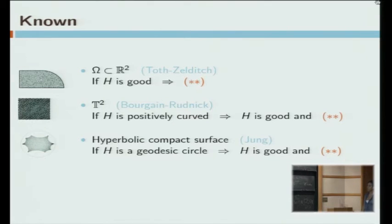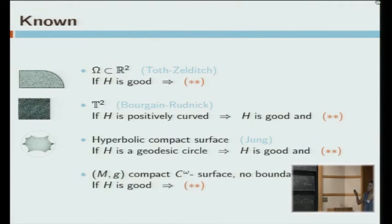On hyperbolic compact surfaces, Jung proved in 2011 that if the curve that you're fixing is a geodesic circle, then the geodesic circle is a good curve and you also get this O of lambda bound. And in a more general case, if you ask your metric to be analytic, not smooth but analytic, together with John Toth, we were able to prove that whenever you ask your curve h to be good, then it's going to satisfy the O of lambda bound. So all of these are very nice results, but you would like to be able to say when is it that a curve h satisfies this condition, the goodness condition.